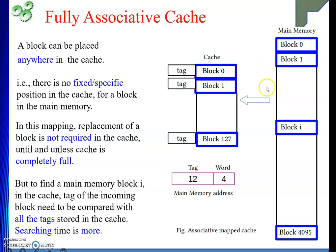In my main memory, we have 4096 blocks and the size of each block is 16 bytes, and the cache memory consists of 128 blocks. So the word field will require 4 bits. The main memory total address is 16 bits because of 64K size. So the tag field will be the remaining bits — that is 12 bits. That means for one particular position in the cache, how many contenders from main memory will there be? 2 to the power 12, that is 4096. Any one of the 4096 blocks can take a position in the cache. So the tag field is 12 bits.